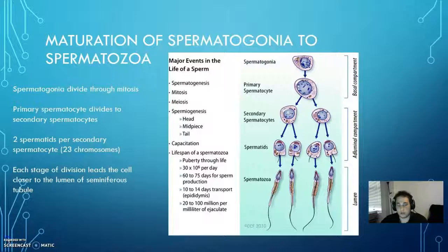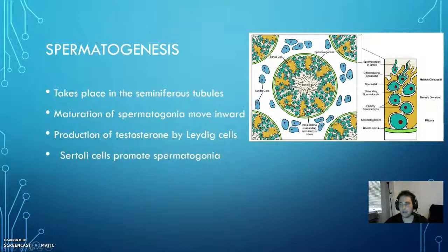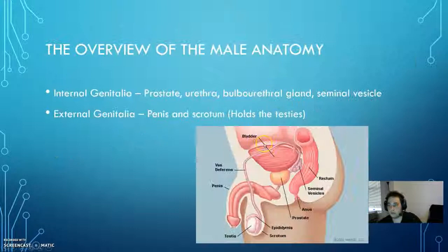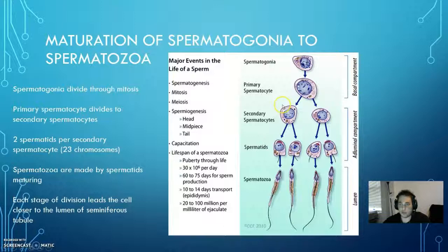Now we're going to discuss the maturation of spermatogonia into spermatozoa. The spermatogonia are on the outside, and GnRH causes the anterior pituitary to release FSH and LH, which promotes Leydig cells to make testosterone. That testosterone enters the basal lamina of the seminiferous tubule, which is in the testes, and it promotes spermatogonia to mature. The spermatogonia divide into two different primary spermatocytes.